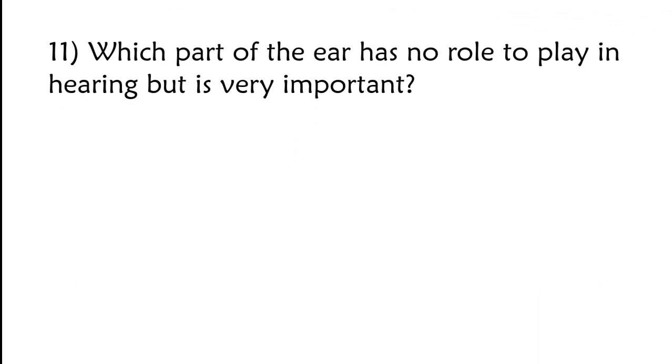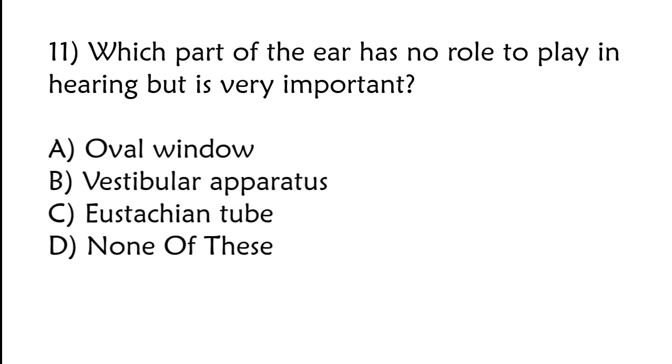Which part of the ear has no role to play in hearing but is very important? Oval window, vestibular apparatus, eustachian tube, or none of these. The correct answer is option B, vestibular apparatus.